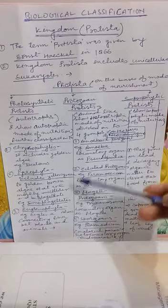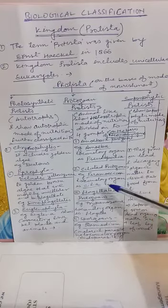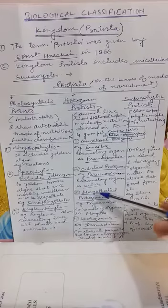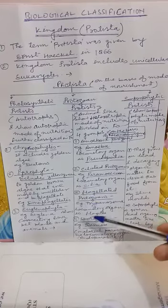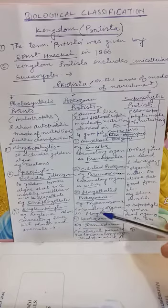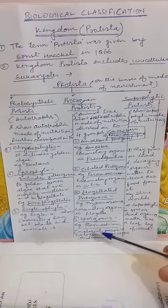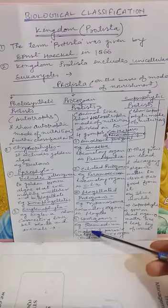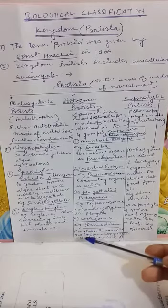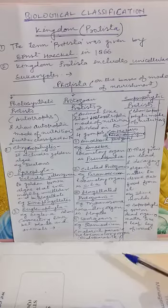The second group is ciliated protozoans, with paramecium as an example, and the locomotory organ of paramecium is cilia. Next is flagellated protozoans — example Trypanosoma — and the locomotory organ is flagella.